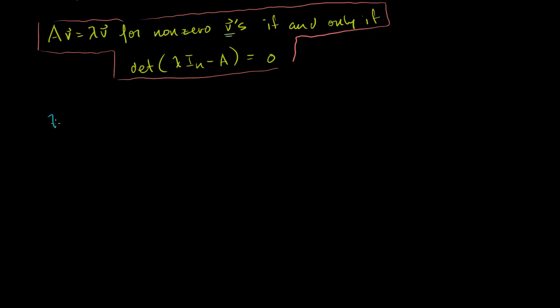Or we could rewrite this as saying lambda is an eigenvalue of A if and only if the determinant of lambda times the identity matrix minus A is equal to 0.